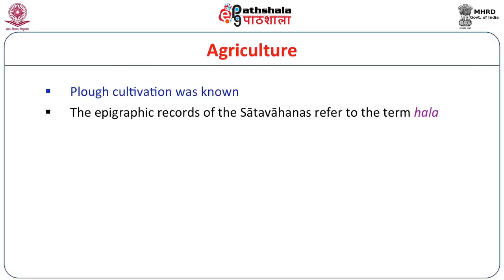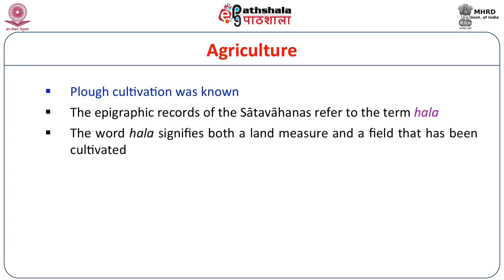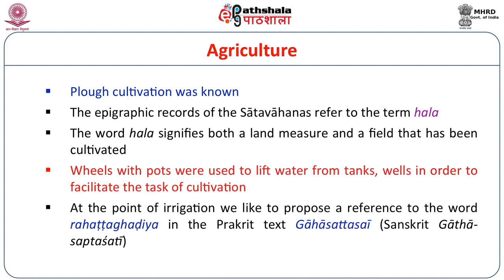Regarding agriculture, plough cultivation was known. The epigraphic records of the Satavahanas refer to the term 'halo,' a word that signifies both land measurement and the plough — essentially related to the land on which cultivation was carried on, producing barley and other crops. Agricultural operations become successful when facilitated by a profuse supply of water, which may come either by natural means or by irrigation.